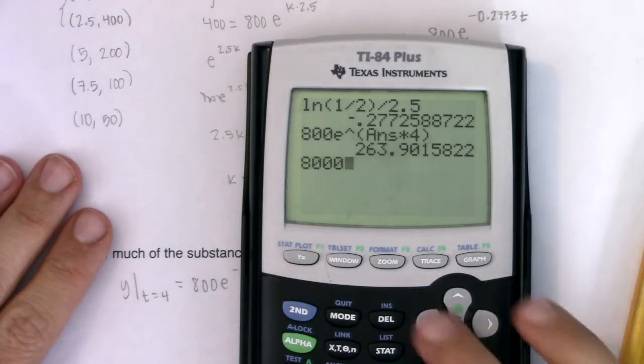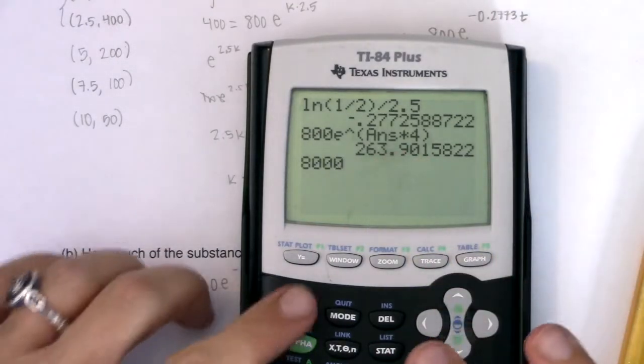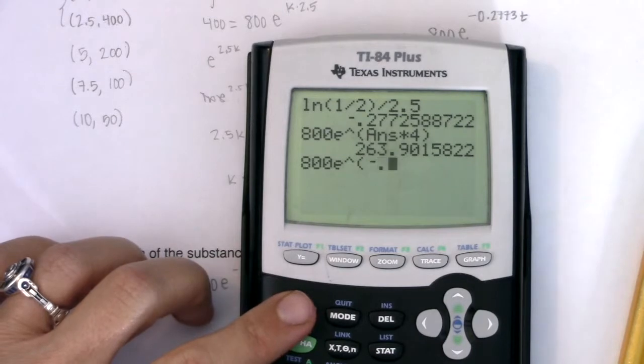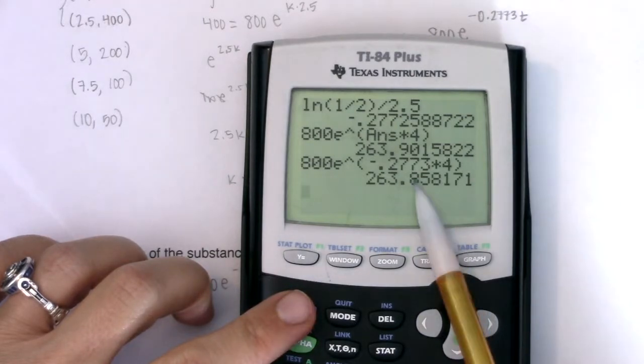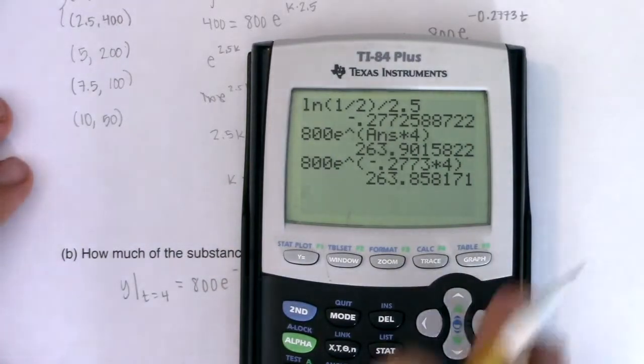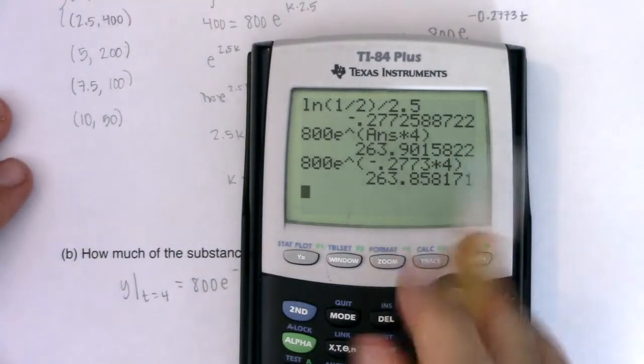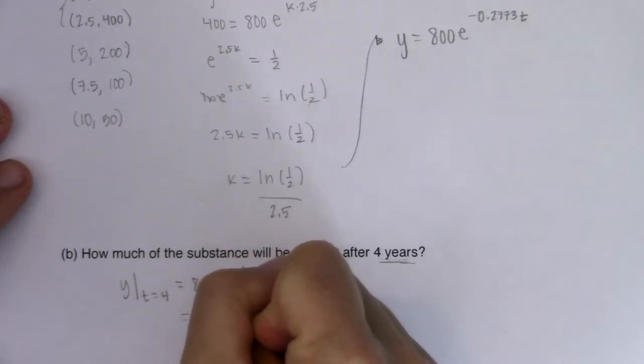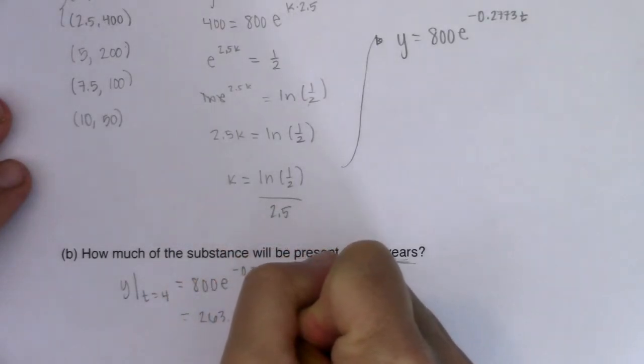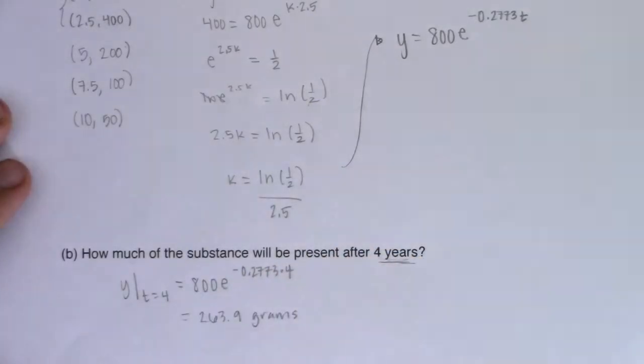If you're not sure where I got the answer, that answer button lives over your negative key, but it's in blue, so you want to hit the second key to activate it. When I hit enter, what am I looking at? About 263.9 grams. Let's just see how different it would have been if I approximated with negative 0.2773 times four. Not really that different. So we'll say 263.9, and the units on this are grams.